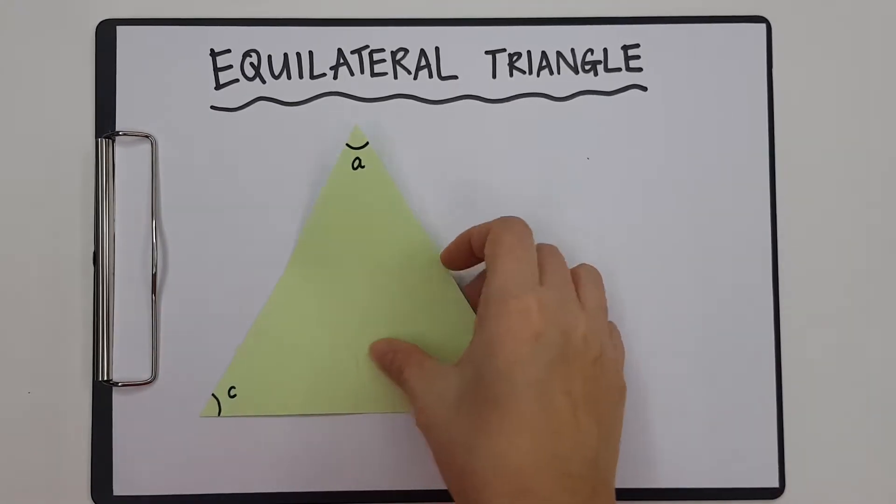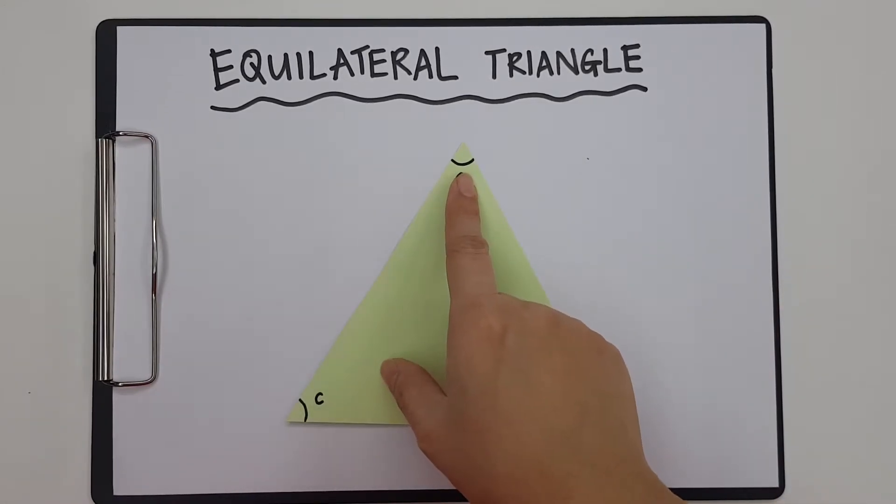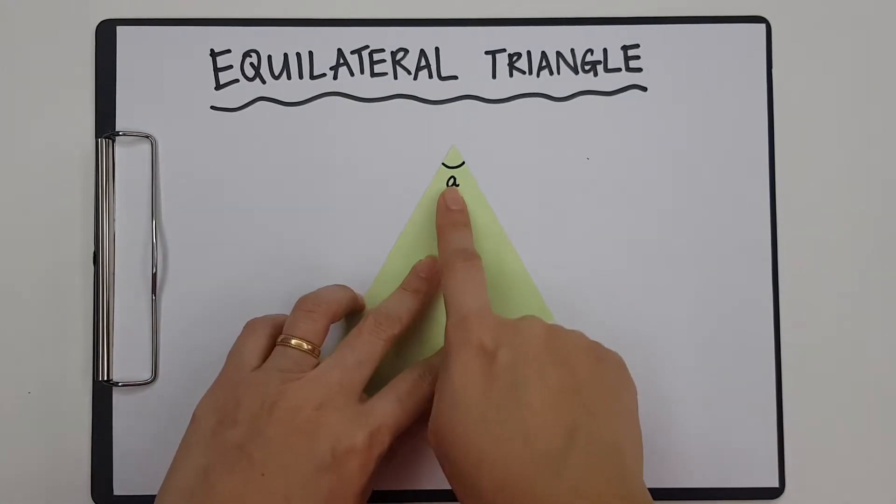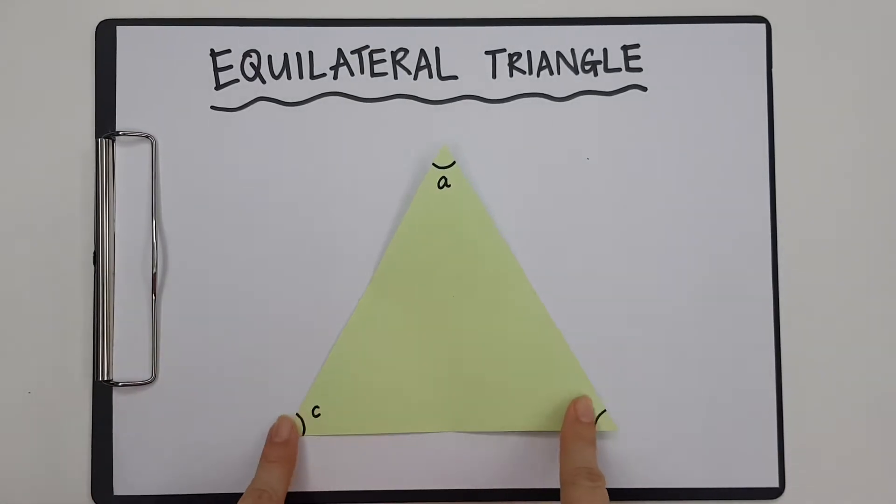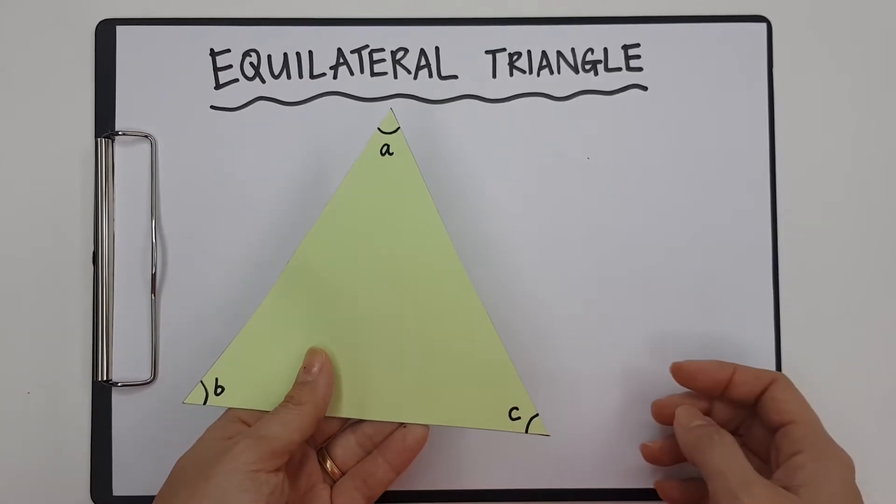So here I have an equilateral triangle with me and I have actually named the three angles in this equilateral triangle A, B and C. We usually use small letters when we are talking about the angles inside, the interior angles, and I have actually labelled it on both sides.